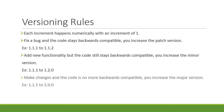When you make changes and the code is no longer backwards compatible, you increase the major version. In addition to that, you have to reset the minor and patch version to 0. For example, 1.1.1 to 2.0.0. This semantic increment will help users make decisions regarding their projects.